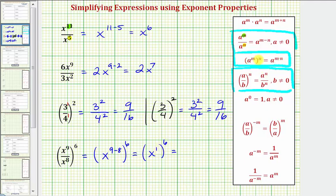So we have powers to power, so we multiply the exponents. One times six is six, so this simplifies to x to the sixth.